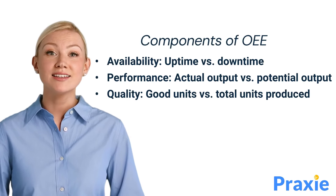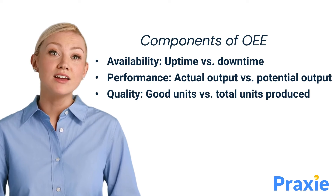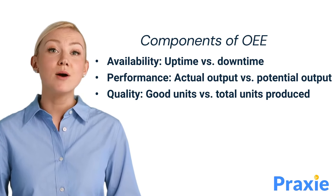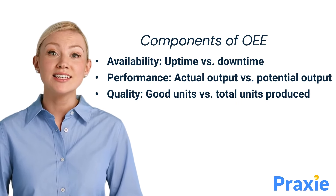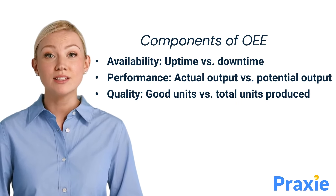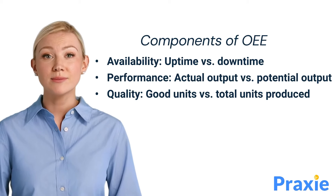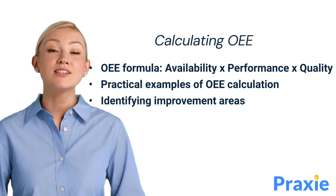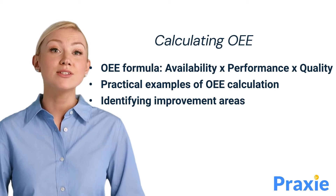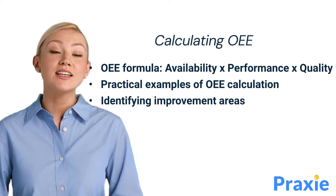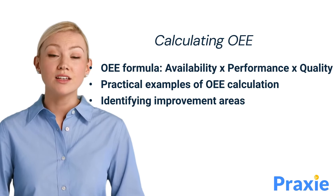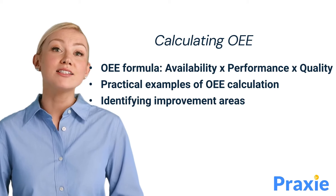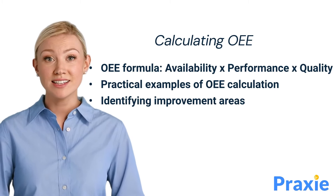OEE consists of three main components: availability, performance, and quality. Each component provides specific insights into different aspects of equipment effectiveness. Calculate OEE using the formula: OEE equals availability times performance times quality. Understanding this calculation helps identify areas for improvement in your production process.